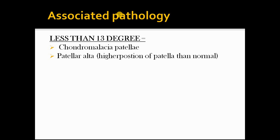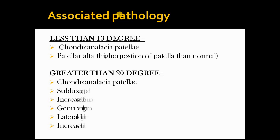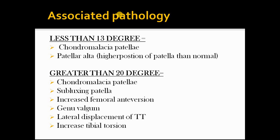If it is greater than 18 or 20 degrees, it is often associated with chondromalacia patellae, subluxing patella, increased femoral anteversion, genu valgum, lateral displacement of the tibial tubercle, or increased lateral tibial torsion.